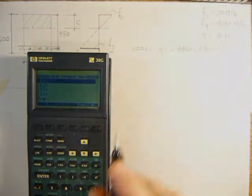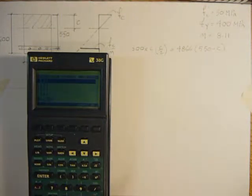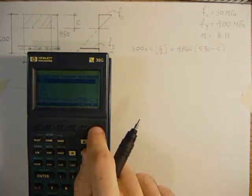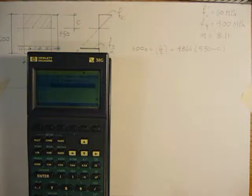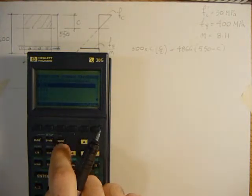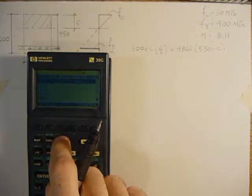150 times X squared, and then bring this to the other side. Minus 4,866 times 550 minus X. So that's the equation, and then we can go into solve mode.